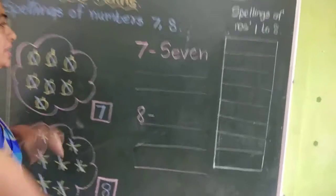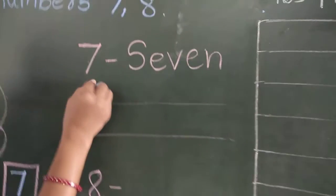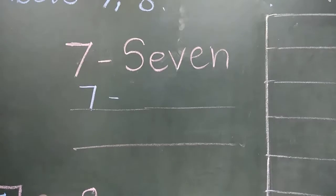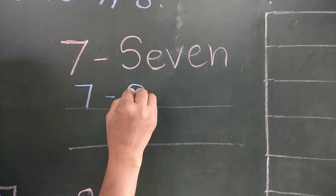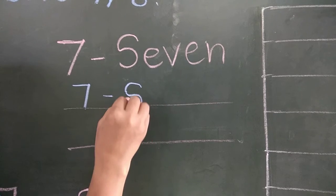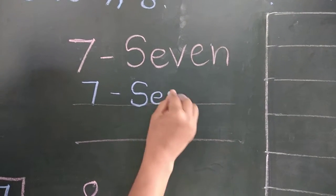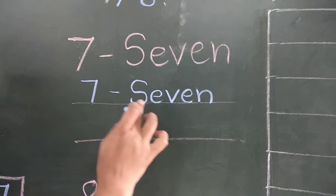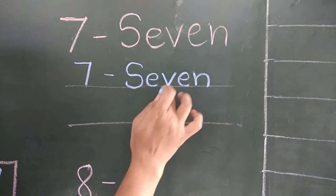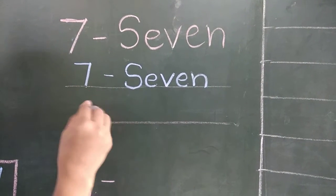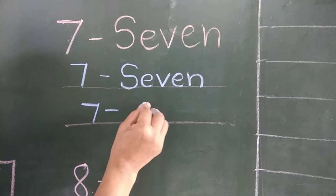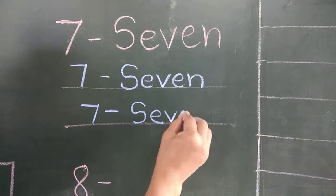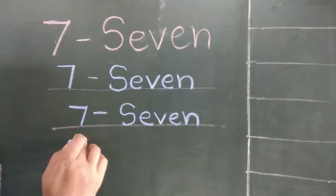Now see here and say after me. First of all you have to write the number, then its spelling. What is the spelling of number 7? First write number 7, and the first letter should be in capital: S-E-V-E-N, 7. Repeat after me: S, E, V, E, N, 7. I am going to write this spelling again — say after me: S, E, V, E, N, 7.